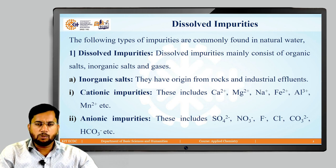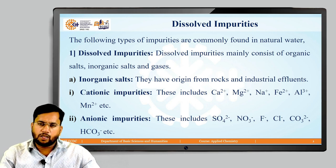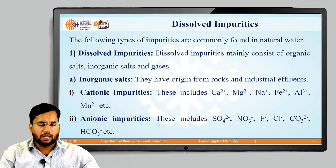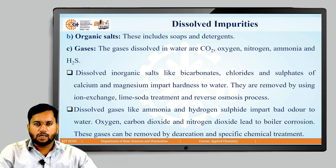Likewise, anionic impurities include counter anions of particular cations like sulfate, nitrate, fluoride, chloride, carbonate, and bicarbonate anions. Dissolved organic impurities include organic salts like soaps and detergents, whereas dissolved gases include carbon dioxide, oxygen, nitrogen, ammonia, and hydrogen sulfide.